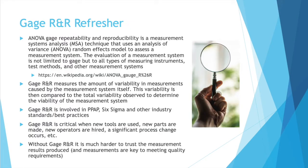Before we jump into the specifics of the ANOVA method, let's have a quick refresher about what gauge R&R is. I have a whole video that goes into great depth about that if you want to check that out. ANOVA gauge repeatability and reproducibility is a measurement system analysis, MSA, technique that uses an analysis of variance — that's what ANOVA stands for — random effects model to assess a measurement system.